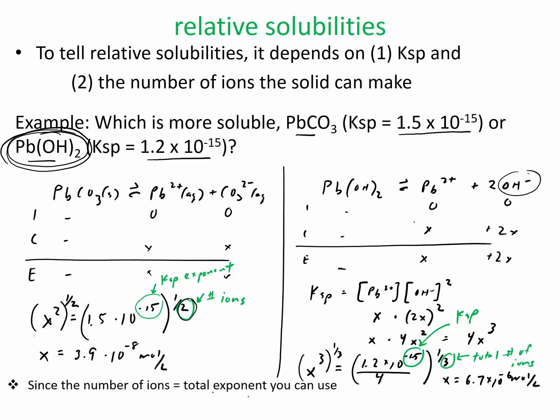So to summarize that, since the number of ions equals the total exponent, you could use the following. You can use this as an estimate. You could use Ksp exponent, whatever the exponent is in the Ksp, and divide that by the total number, the number of total ions. And that gives you a good estimate of the solubility.